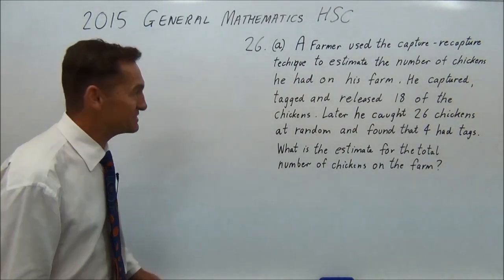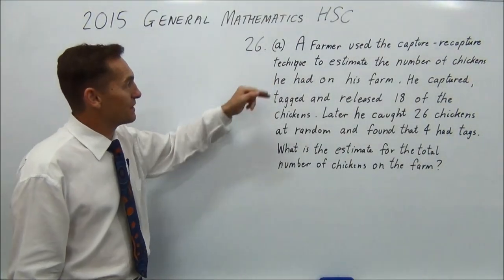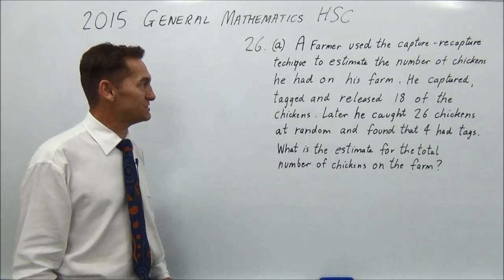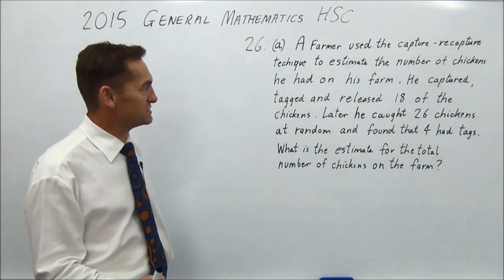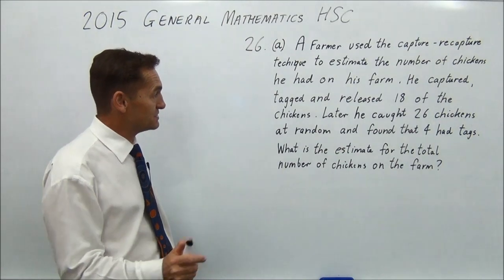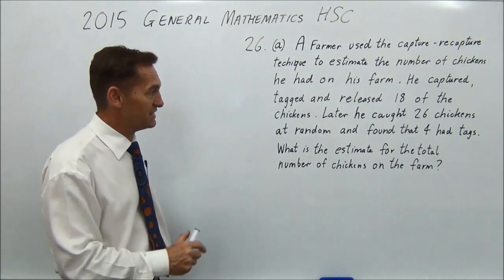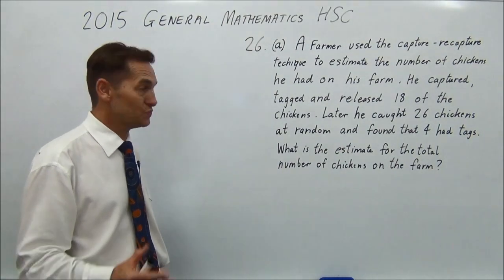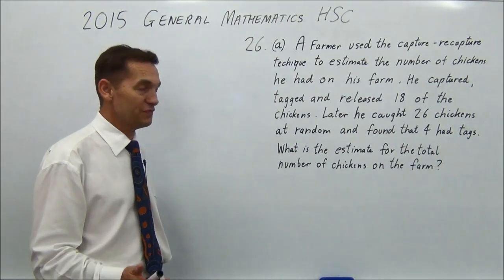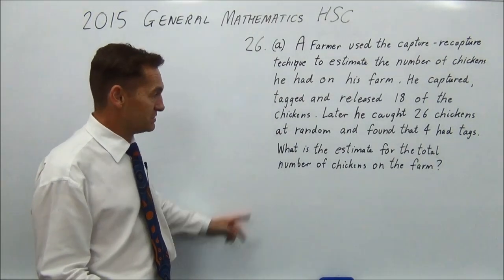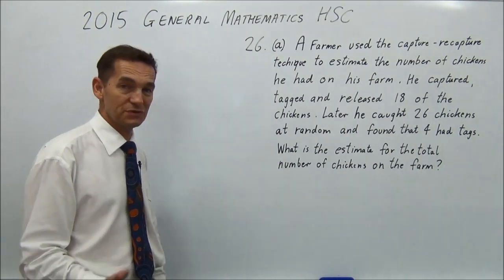G'day again. Question 26. So we'll start with part A. A farmer used the capture-recapture technique to estimate the number of chickens he had on his farm. He captured, tagged and released 18 of the chickens. Later he caught 26 chickens at random and found that 4 had tags. What is the estimate for the total number of chickens on the farm?